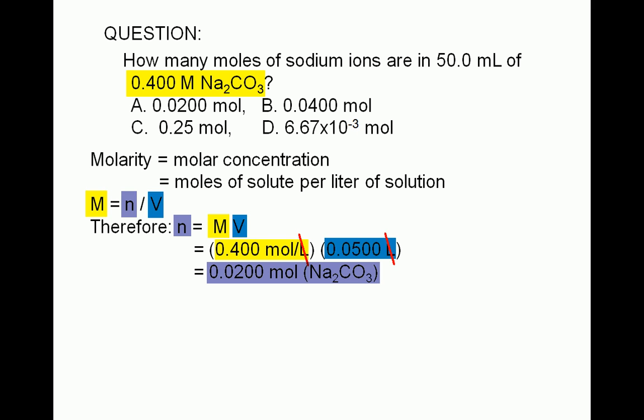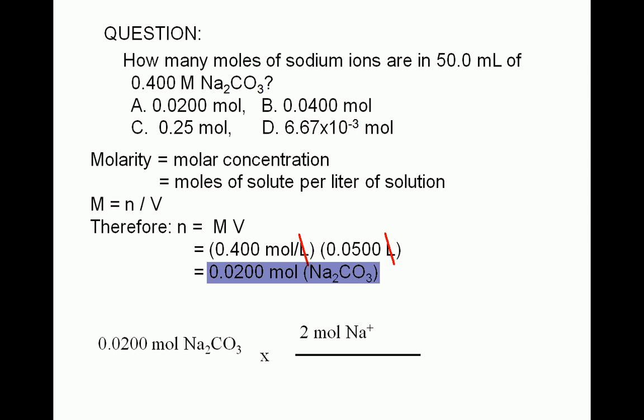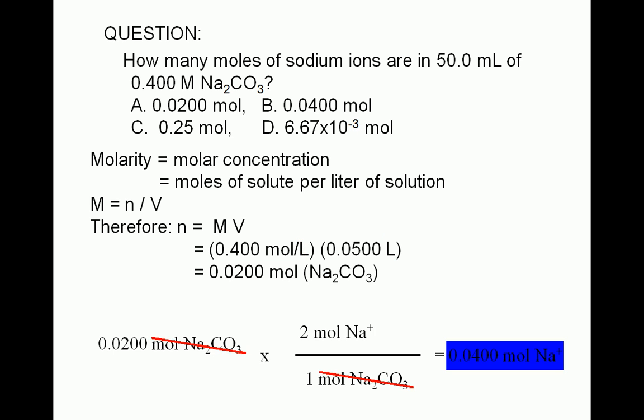But the question is asking for moles of sodium ions. To do this, we start with the moles of sodium carbonate, 0.0200 moles of sodium carbonate. Then multiply by the number of moles of sodium ions per mole of sodium carbonate. The subscript of sodium in sodium carbonate is 2. That means that there are 2 moles of sodium ions for every mole of sodium carbonate. Which gives us an answer of 0.0400 moles of sodium ions.